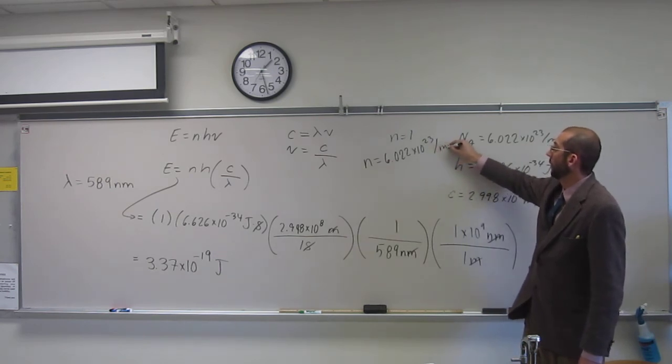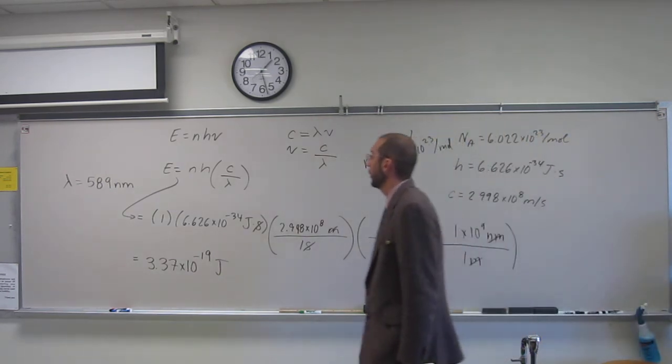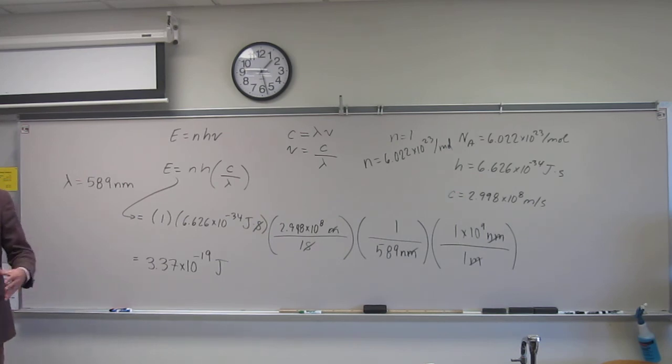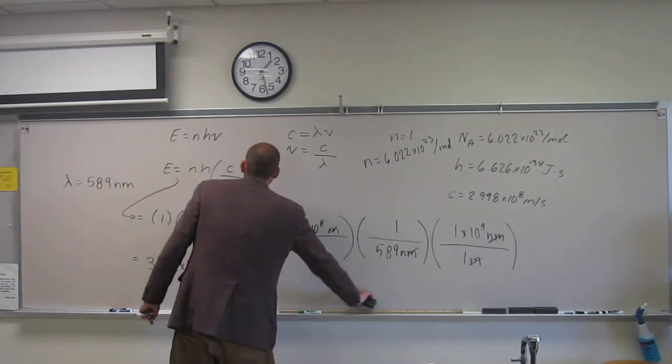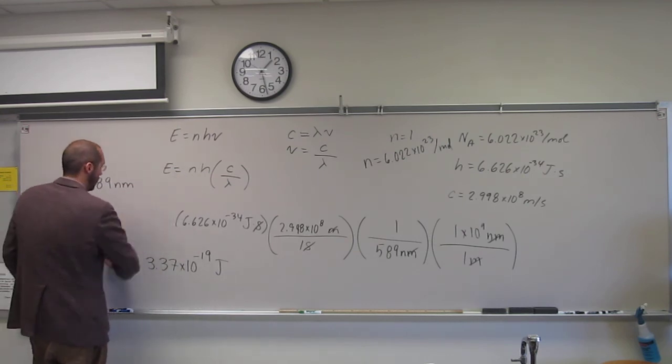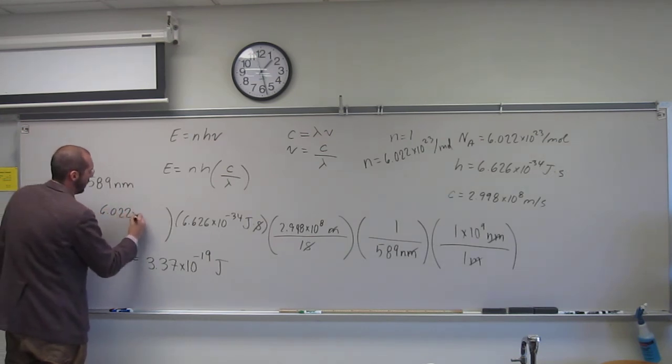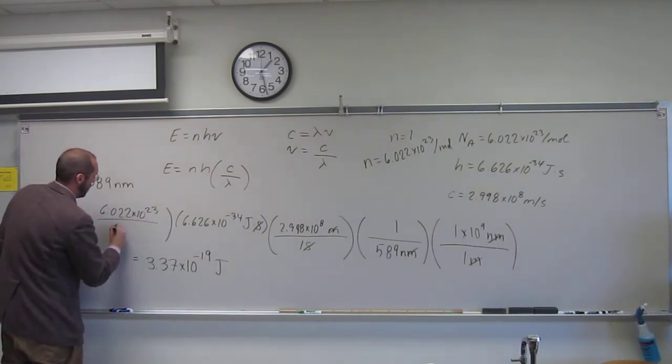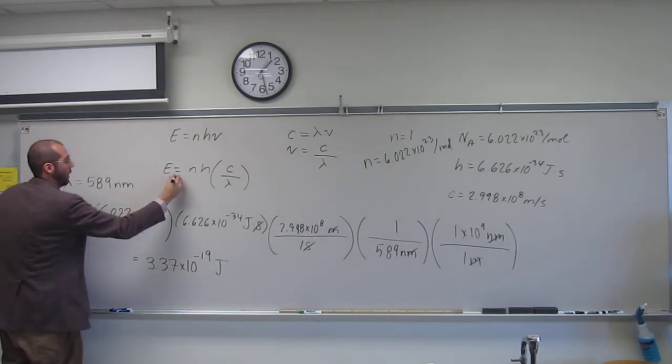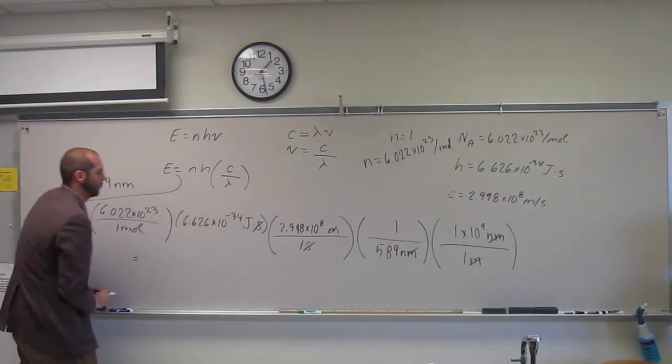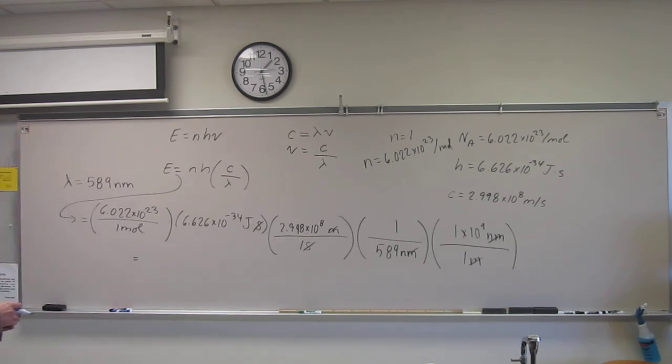Or if you prefer, per mole. So if we do that, so is everybody good with this? Can I erase parts of it? I'm just going to erase parts of it so I don't have to rewrite the whole thing. So it's going to be that same number just like what was said times Avogadro's number 6.022 times 10 to the 23rd.